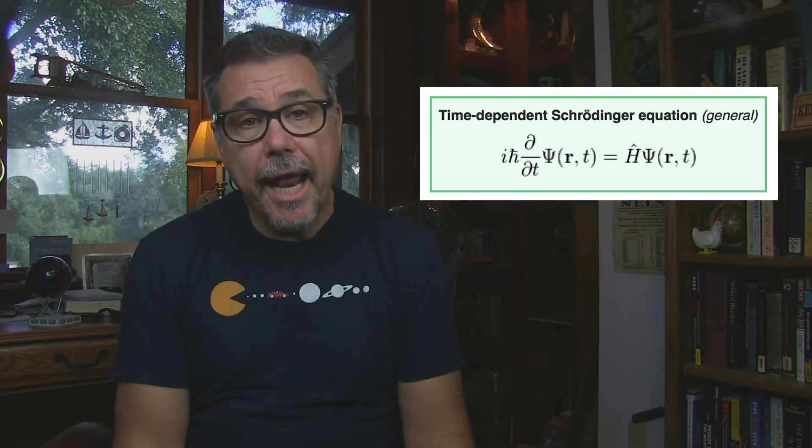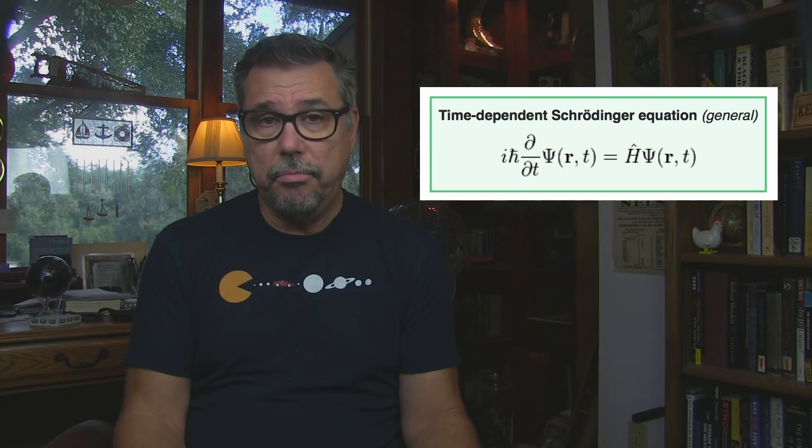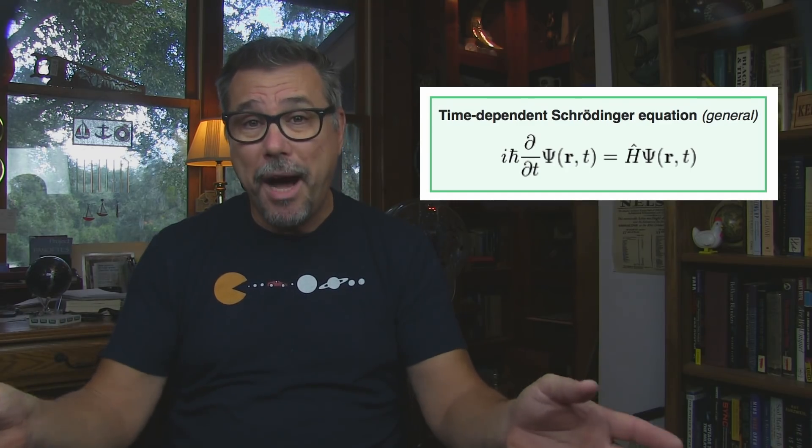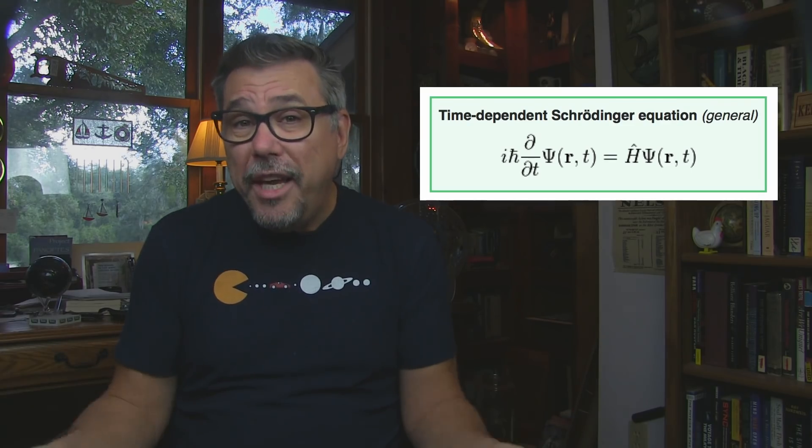Schrödinger's equation is to quantum mechanics what Newton's second law of motion is to classical mechanics. It describes how a physical system — say, a bunch of particles subject to certain forces — will change over time. When applied to more complicated things besides particles, like cats and boxes, we get probable outcomes from Schrödinger's equation. If this equation is a probability distribution — a picture of the possibilities of where a particle might be — then questions like 'where is the particle when we aren't looking?' don't have any meaning.